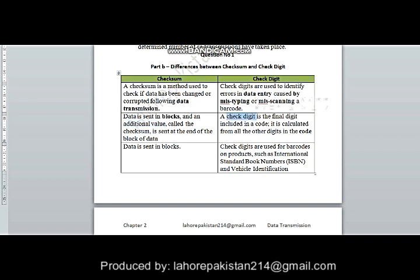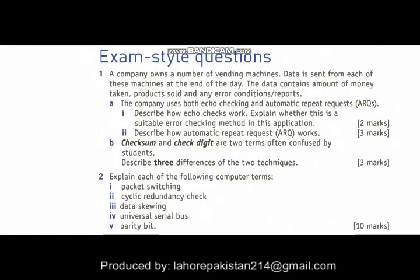In checksum, an additional value is attached to the whole block, while in check digit, a final digit is added to one code only, not the whole block. The third difference is that in checksum the data is sent in blocks, while in check digit the data is sent in the form of codes, not in blocks. So this was question number one of your exam-style questions. Next time I'll solve question number two. Thank you.